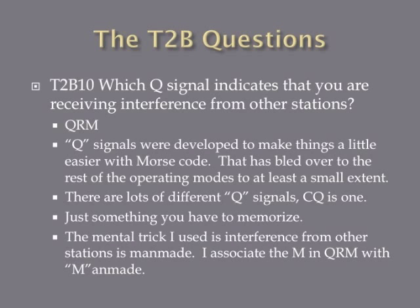Which Q signal indicates that you are receiving interference from other stations? The answer is QRM — this is one to memorize. Q signals were developed back when Morse code was the way to communicate; they shortened common phrases into short two- or three-letter codes. The memory trick for QRM is that the M stands for man-made, since the interference is coming from man-made stations. So QRM indicates you're receiving interference from other stations.